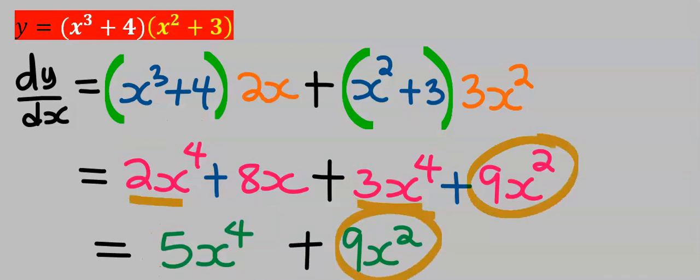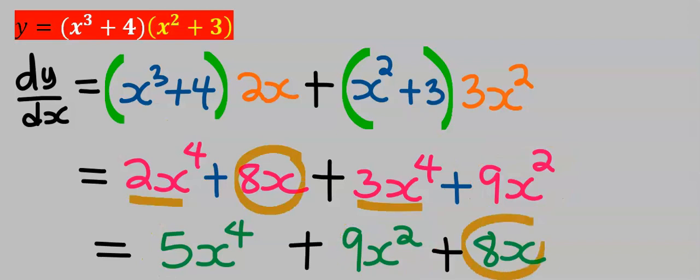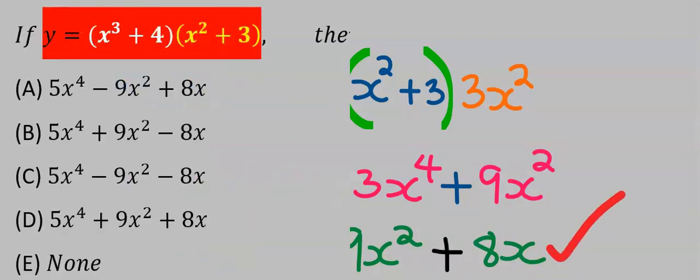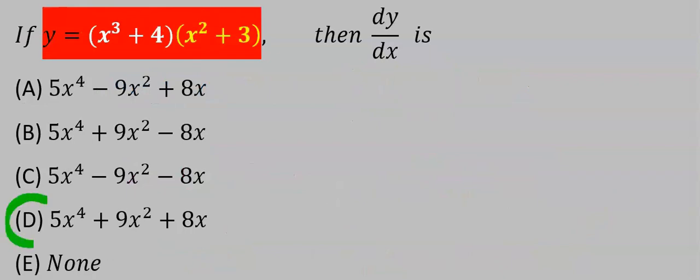Next is the 9x to the power of 2 and 8x. Nothing else can add up, hence this is our final answer. From the options, our answer is D.